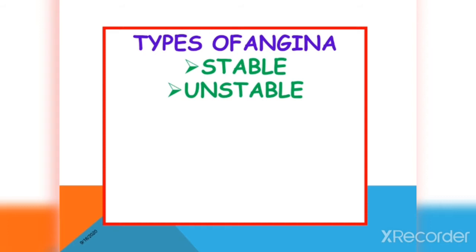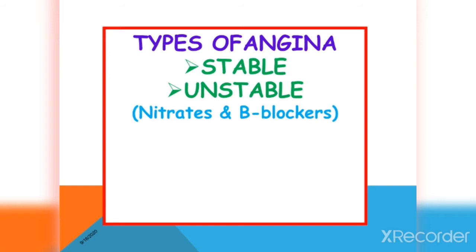The initial best choice is to give your patient vasodilators, that is nitrates. You can also give your patient beta blockers. Beta blockers have two main actions on the heart: they decrease heart rate, and they desensitize the myocardium to the actions of adrenaline. These are beneficial effects for decreasing the workload and oxygen requirement of the heart and improving the symptoms of angina.